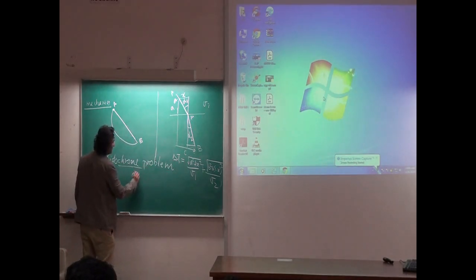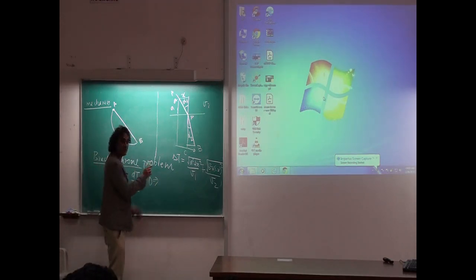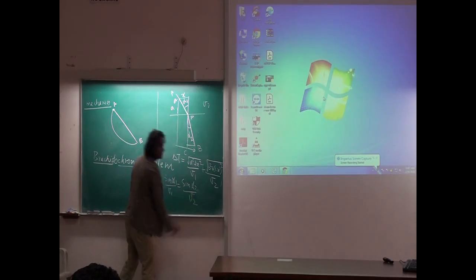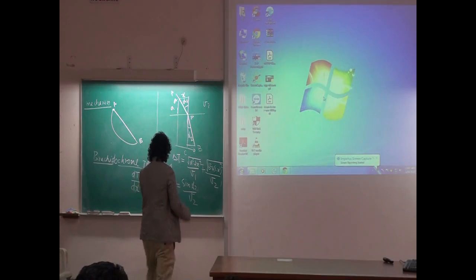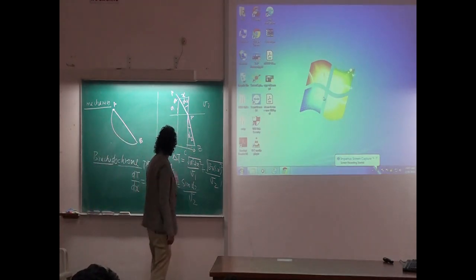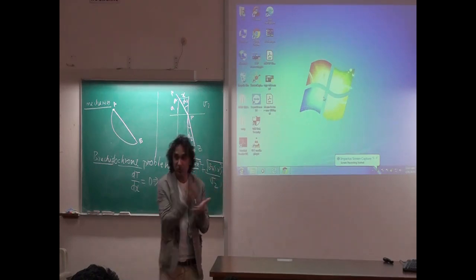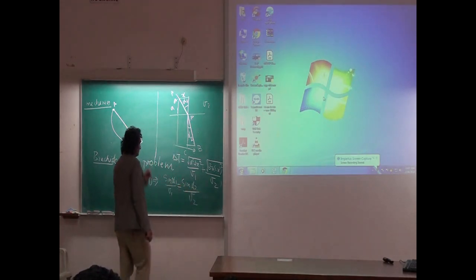According to the French mathematician Fermat, light does not bother about the shortest path, it wants to minimize time - it wants to get there fastest. So it becomes a simple problem of minimization. You do dT by dx and equate it to 0. You find a condition: sin alpha 1 by v1 equals sin alpha 2 by v2. This is nothing but Snell's law, and this entire branch of calculus of variation actually sprung from this.